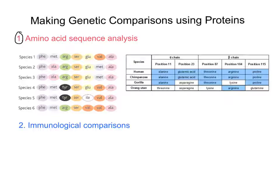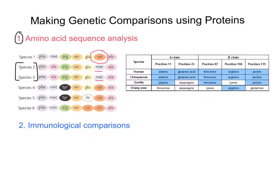If you simply look at them and try to spot similarities and differences — for example, if we look at species one compared to species two, species one has a VAL (valine) here, but species two and three have MET (methionine). In fact, species two and three have the exact same sequences, so we could say that species two and three are more closely related to one another than they are compared with species one. If you look at species four, it has a VAL like species one, but it has a TYR in the third place in the sequence, which is different to species one, two and three.